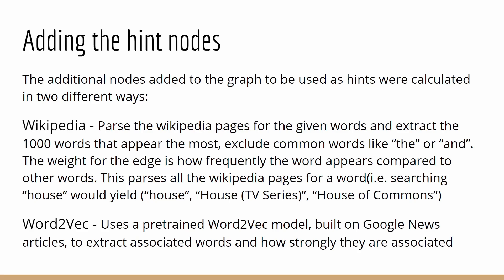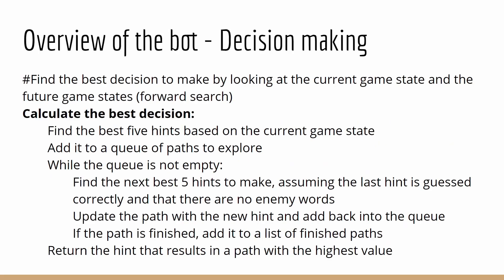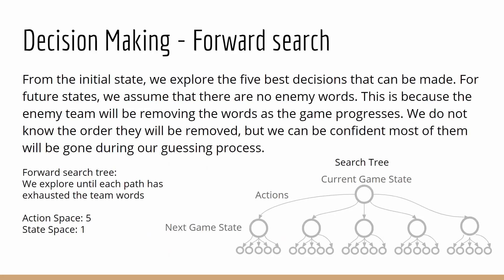Word2Vec is a neural network that was trained on Google News articles, and this is the same model that Jeremy Nyman uses in the referenced prior work. For the forward search over all the possible paths, from the initial state we explore the five best decisions that can be made. For each of the future states, we assume that there are no enemy words, because the enemy team will be removing the words as the game progresses. We don't know the order they'll be removed, but we can be confident those words will be gone during our guessing process, so we can plan our guesses around that.